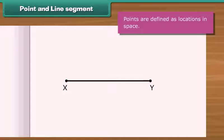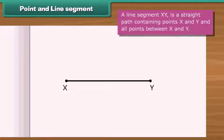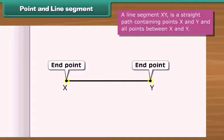What if the two points are connected? We will get a line segment. A line segment XY is a straight path containing points X and Y and all points between X and Y. The points X and Y are endpoints.